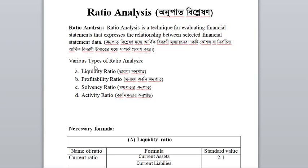There are various types of ratio analysis. These include liquidity analysis, profitability, solvency ratio, and activity ratio. In this lesson, the formulas for each will be shown one by one.